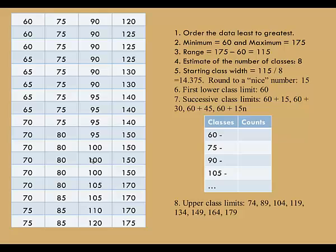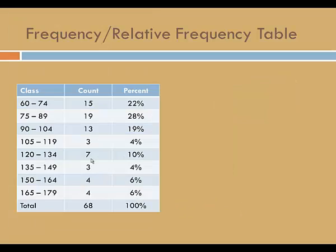Now I just need to add upper class limits. I want to make sure that there's no overlap. So for the first class, I'll make sure that it ends at 74. That's before the next class starts at 75. I'll end that class at 89 so that it ends before the next class starts at 90. And here's the finished product.